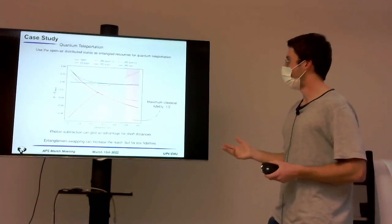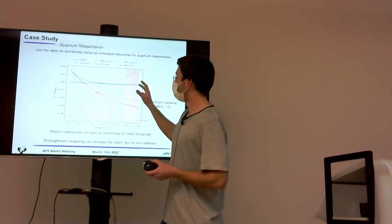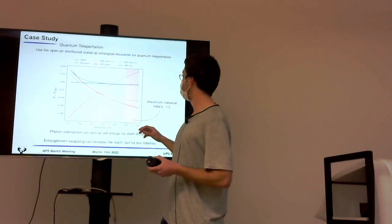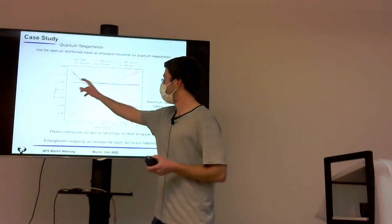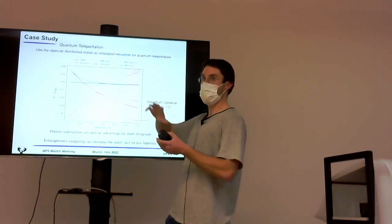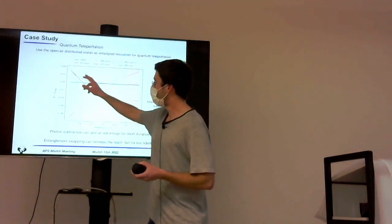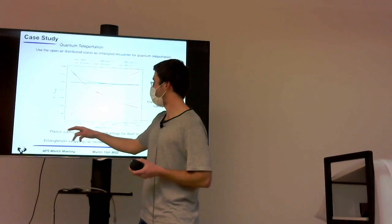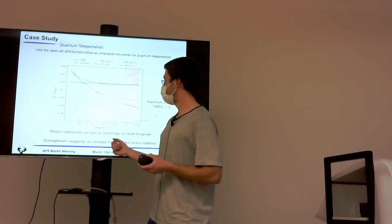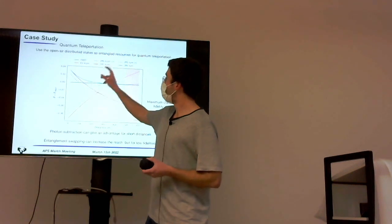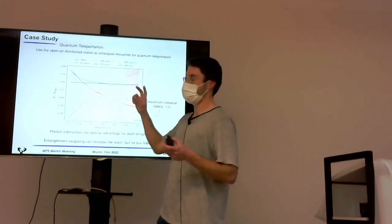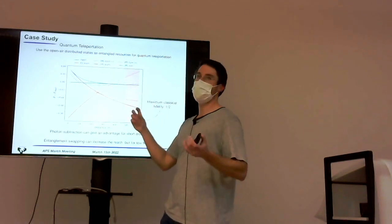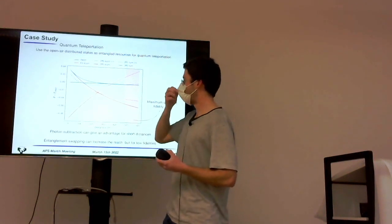In this case, what we will show is the results for photon subtraction and entanglement swapping compared to not doing any entanglement distillation or swapping. So, the green line, which is zero, represents the two-mode squeezed thermal state that has traveled through open air. And we're representing fidelity, average fidelity differences, versus the distance that the state have traveled. So we represent photon subtractions as solid lines, the heuristic or theoretical photon subtraction, and as dashed lines, the more experimental one. The one that's closer to reality. And in this orange line, we represent entanglement swapping.